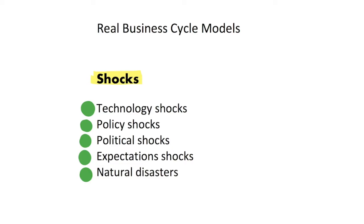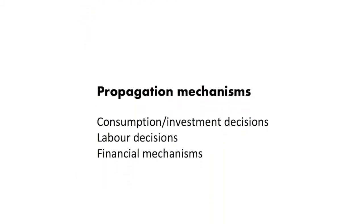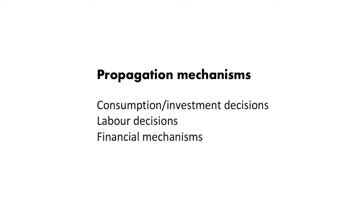That moves us on to propagation mechanisms. Propagation mechanisms are what our model says is going to increase, dampen, or extend our shock. Once we've had our shock — say, a productivity shock where productivity in the economy increases — that will have its direct impact on the economy. However, propagation mechanisms are about the indirect impacts, and we build a whole model which tells us what will happen in our economy once we have some sort of shock to the system.